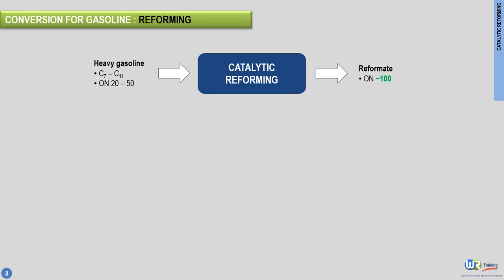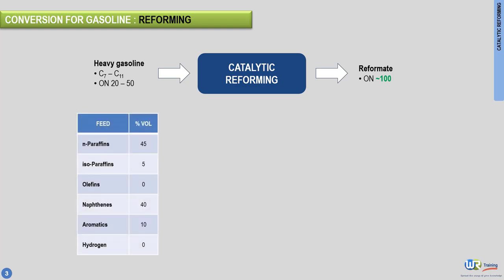The following table illustrates a typical catalytic reformer feed composition. The feed comprises C7 to C11 hydrocarbons. This hydrocarbon mixture is rich in normal paraffins and naphthenes. The feed also contains small amounts of isoparaffins and aromatics.